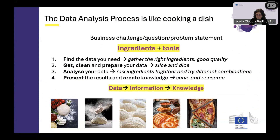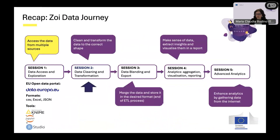You probably remember from the first session the metaphor that data analysis is a lot like cooking. You need to have in mind a specific goal — in this case, finding partnerships between universities. Then you need specific ingredients and the right tools to merge everything together. In the first session we tried to collect raw ingredients: we learned about the European Data Portal and how to access open data from different sources. We also accessed different data formats — specifically CSV, Excel, and JSON — very common formats you will face as a data enthusiast.